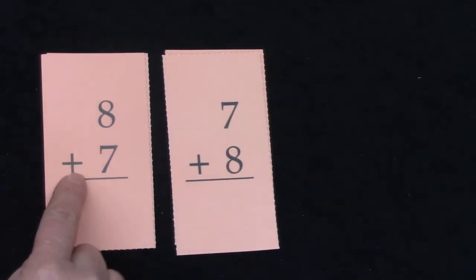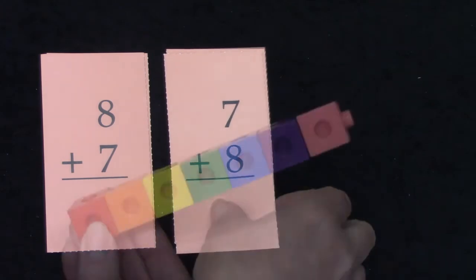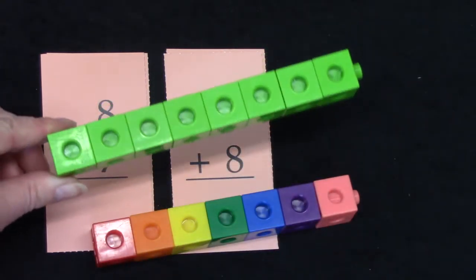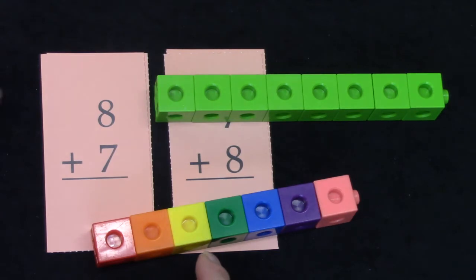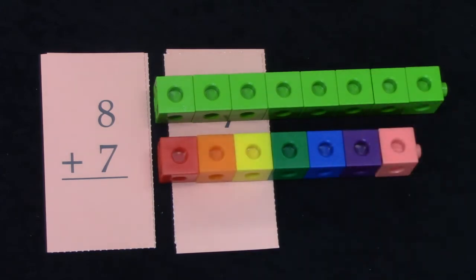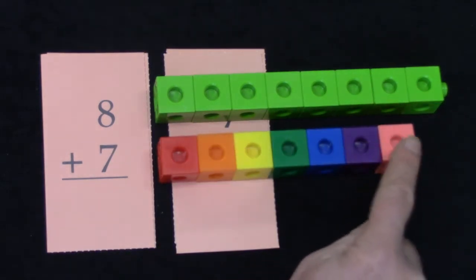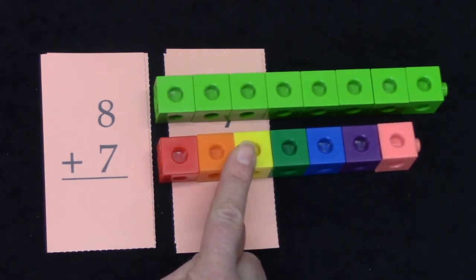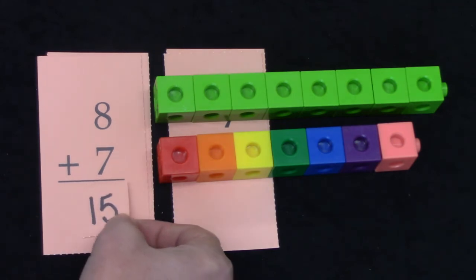Well here we have 8 plus 7 and 7 plus 8. In both of these facts we're adding a 7 and we're adding it to an 8. Well let's do this one first. 8. 1, 2, 3, 4, 5, 6, 7, 8 plus 7. 1, 2, 3, 4, 5, 6, 7. 8 plus 7. Well we could just count them, or we could think we'll take our smallest number. 7 plus 7 is 14 plus one more. That would be how many? 15. 8 plus 7 is 15.